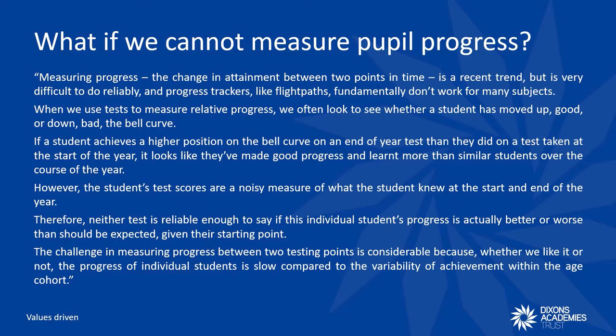She says: 'Measuring progress — the change in attainment between two points in time — is a recent trend, but it's very difficult to do reliably. And progress trackers, like flight paths, fundamentally don't work for many subjects. When we use tests to measure relative progress, we often look to see whether a student has moved up or down on the bell curve. If a student achieves a higher position on the bell curve in an end-of-year test than they did on a test taken at the start of the year, it looks like they've made good progress. However, the student's test scores are a noisy measure of what the student knew at the start and at the end of the year. Therefore, neither test is reliable enough to say if this student's progress is actually better or worse than should be expected, given their starting point.'